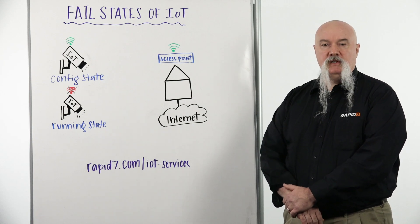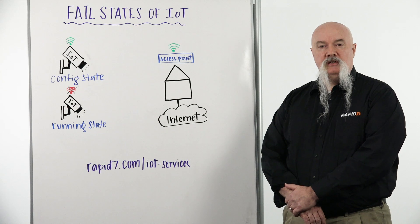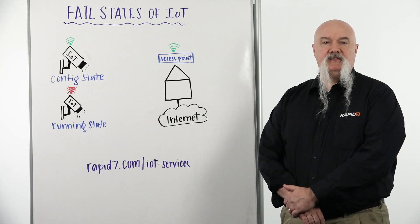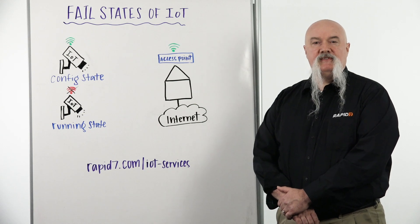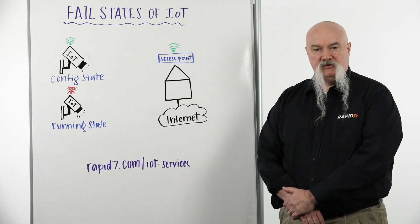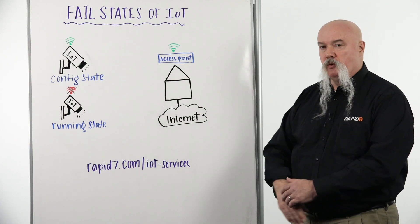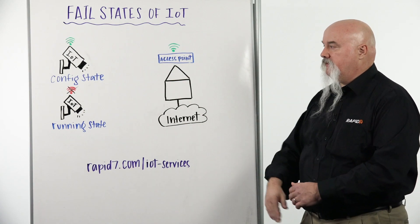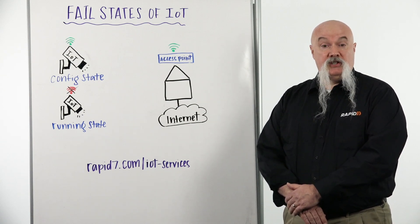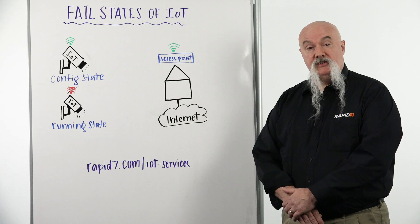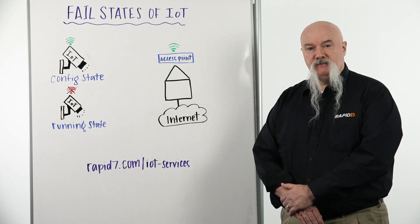This week our topic is Fail State of IoT. During testing and research of IoT technology, we like to test for various fail states on the technology — what happens when things quit working the way they're supposed to. The two states we like to test for are failure of an access point and failure of connectivity to the internet. Consumer grade IoT technology is often configured to tie into your home Wi-Fi access point.